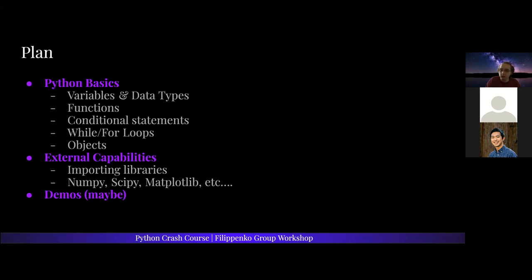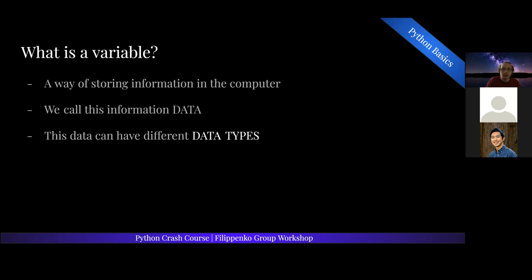After the basics, we're going to talk about external capabilities — importing libraries. How do you use external code that other people have written — libraries that we implement into our own code to speed up our processes and make our code a lot more powerful? Being able to do linear algebra, make pretty plots, and do curve fitting are all examples of that. We'll talk about that after we cover the basics.